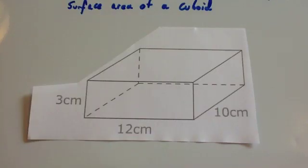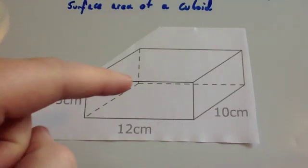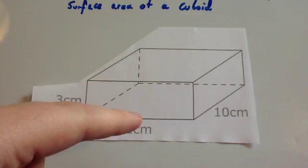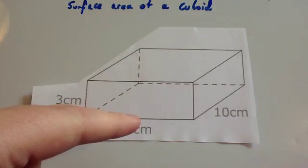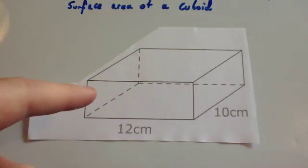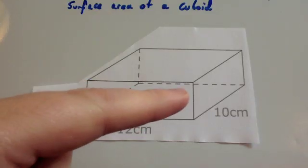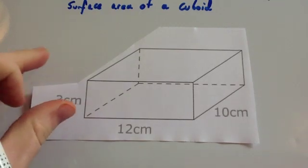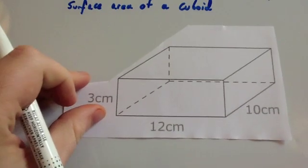You may notice that some of the faces will be the same. For instance, the top area will be the same as the area of the bottom face. The area of the left hand face will be the same as the area of the right hand face, and so on. So let's work out the surface area of this cuboid.